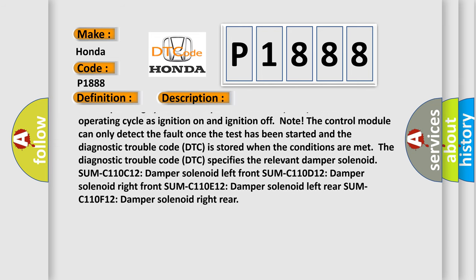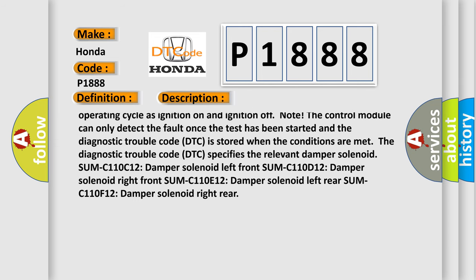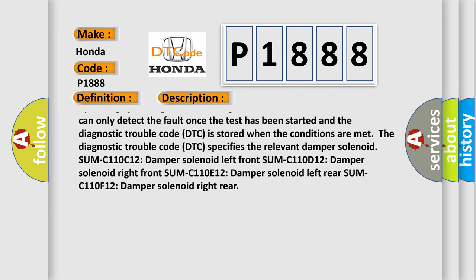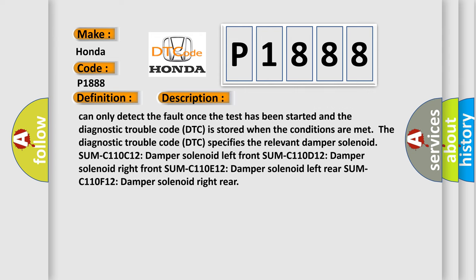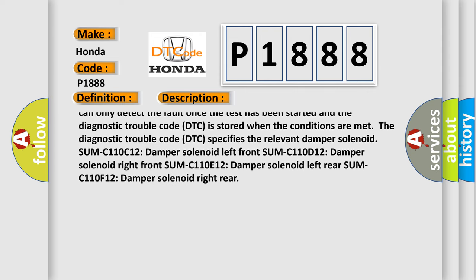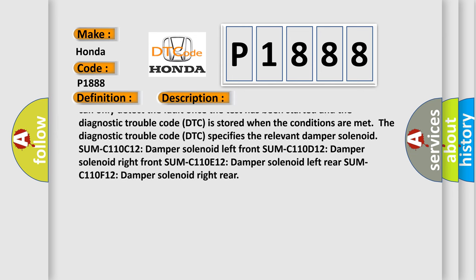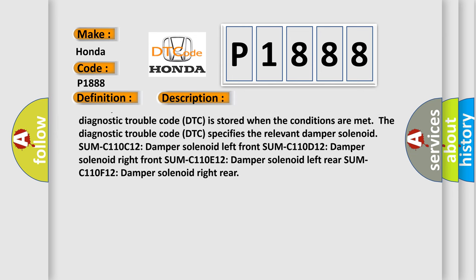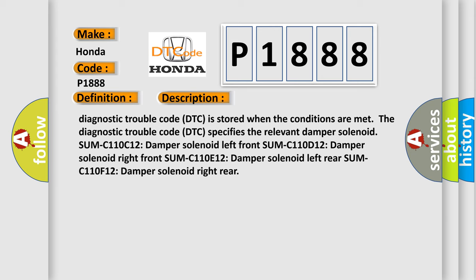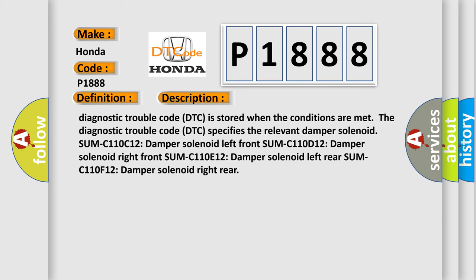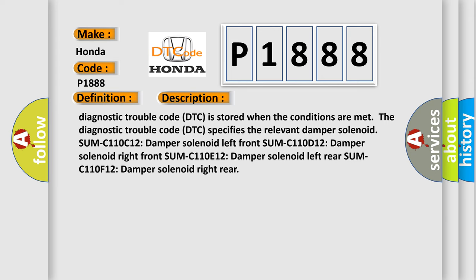The diagnostic trouble code DTC specifies the relevant damper solenoid: SUM-C110C12 damper solenoid left front, SUM-C110D12 damper solenoid right front, SUM-C110E12 damper solenoid left rear, SUM-C110F12 damper solenoid right rear.